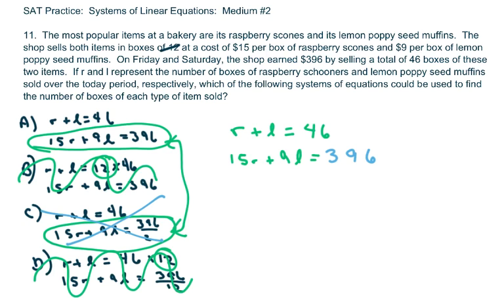So basically, our answer is just going to be 396. It doesn't say anything about the number sold per day.